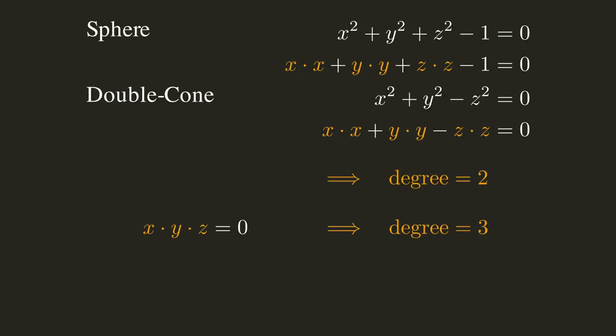If two terms have different amounts of those variables, the degree would be the bigger number. So x squared times y times z plus z squared has a degree of four, and so on.